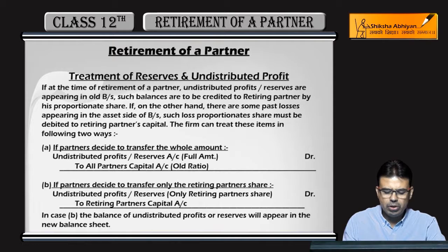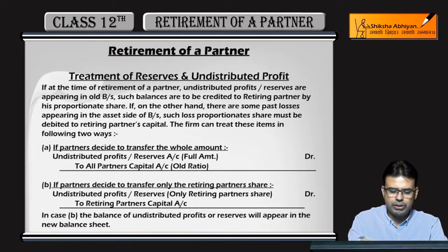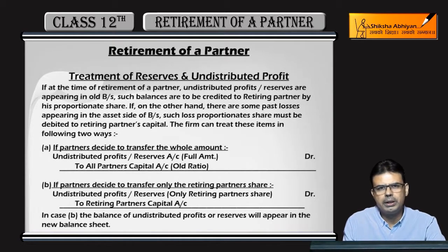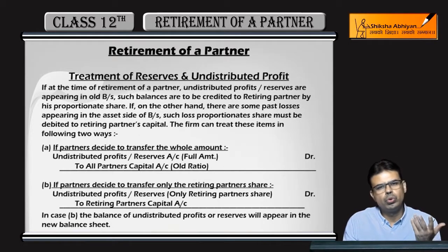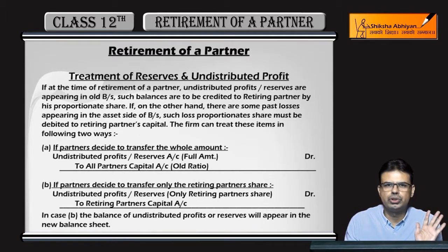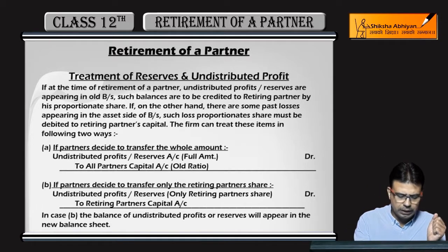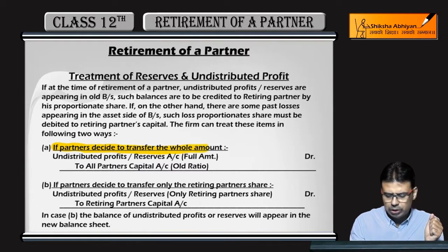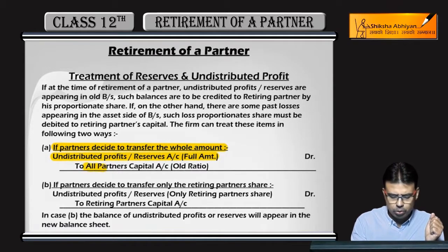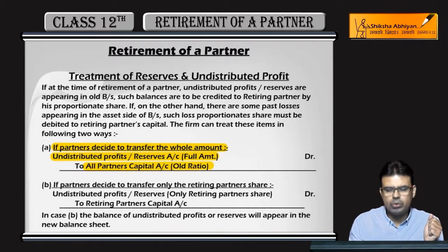You can learn the treatment of reserves and undistributed profits. When there is a retirement of a partner, the amount of reserves or undistributed profits are distributed to old partners. There are two ways to do it. One way is that if the partners decide to transfer the whole amount of undistributed profits or reserves, it is debited to all partners in their old profit-sharing ratio.